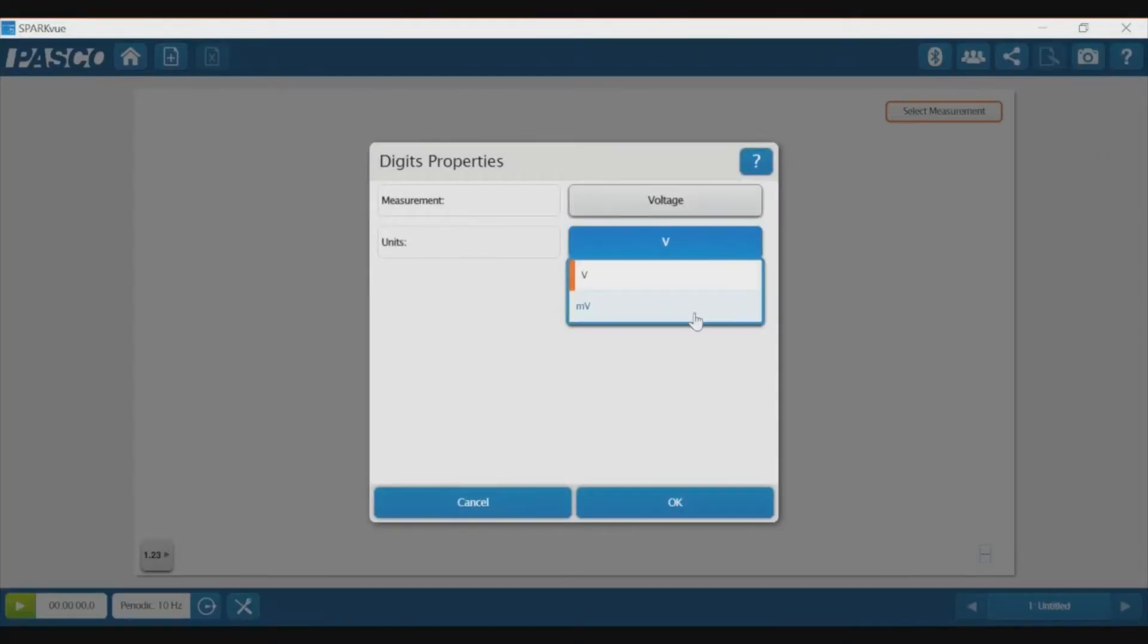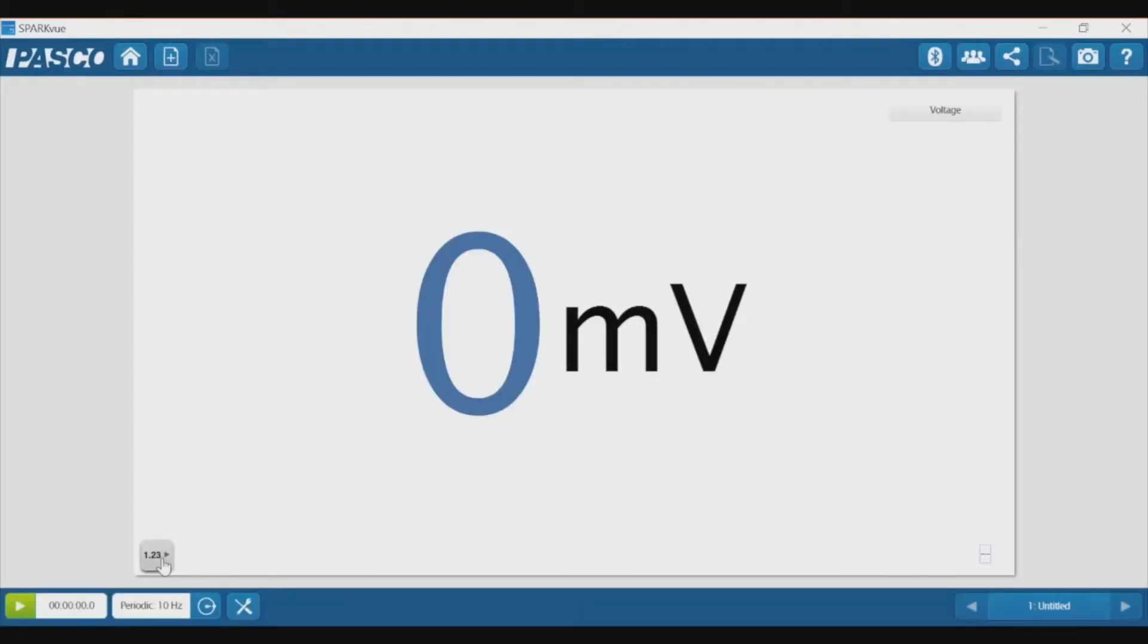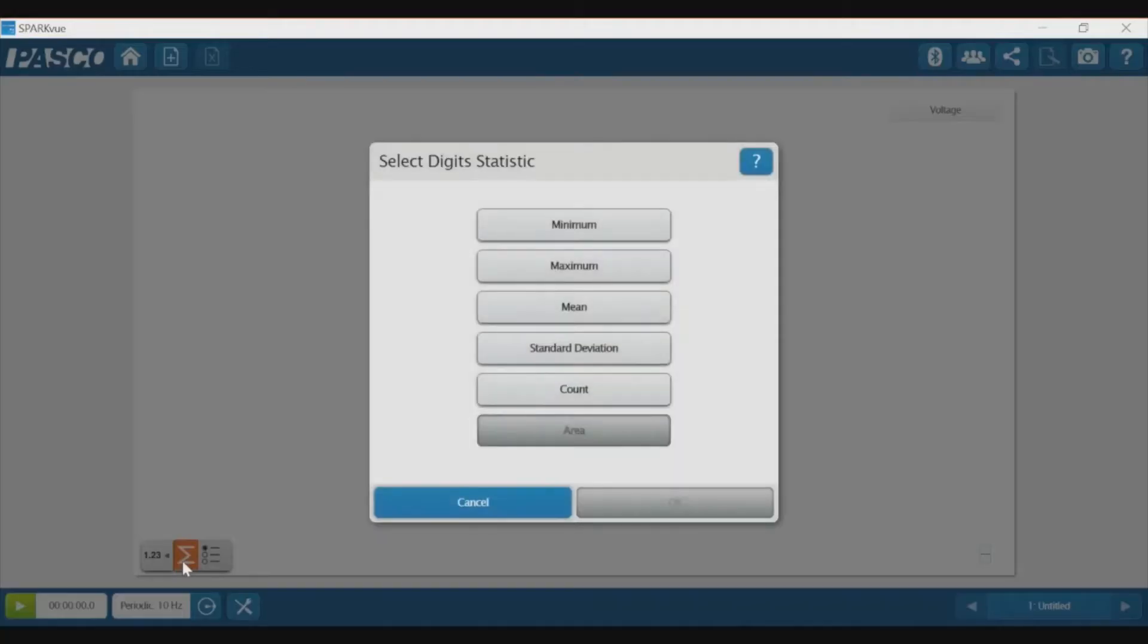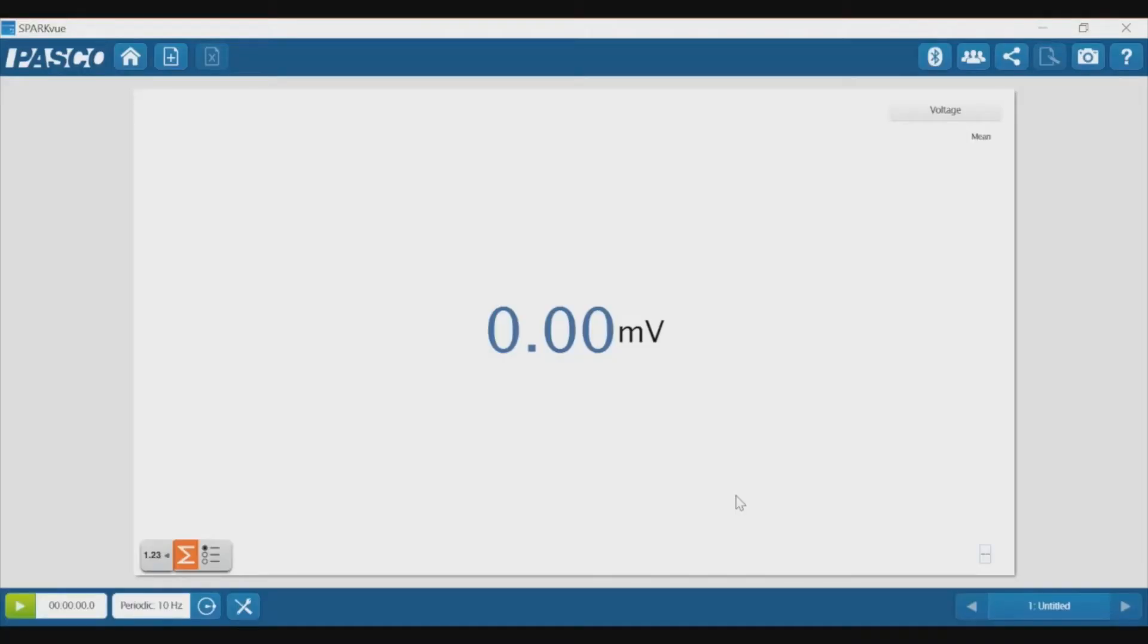Change the units to millivolts. In the lower left corner, click on 123 and then the sigma symbol. Then choose Mean. This will average the voltage data, which helps to reduce the experimental noise that might impact your results.